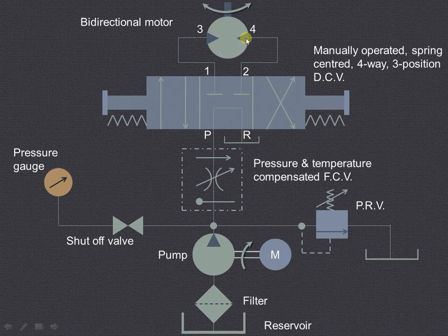This is the bi-directional motor. When liquid is admitted on one side it will rotate in one direction, and when liquid is admitted through port 4 it will rotate in the other direction.